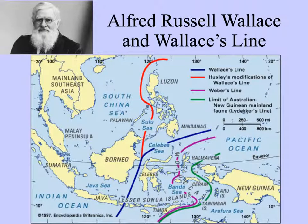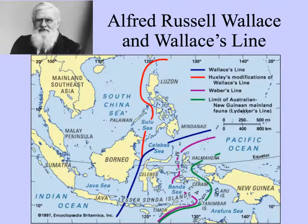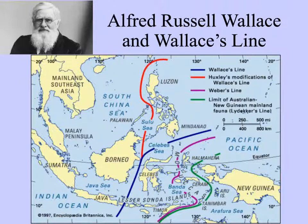Here's a picture of Alfred Russell Wallace and Wallace's line — the blue line going through the Celebes Sea between Borneo and the Celebes Islands. Different scientists have proposed slightly different divisions: Huxley's modification shown in red, Weber's line shown further east, and Lideker's line, which describes the limit of the Australian and New Guinean fauna.